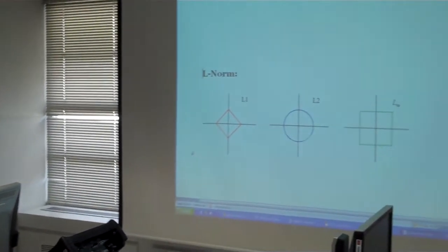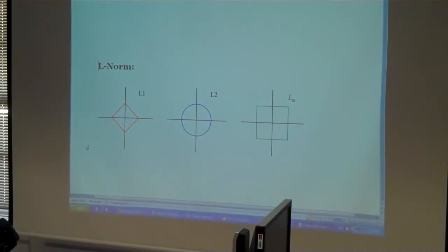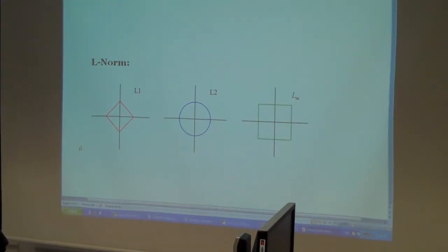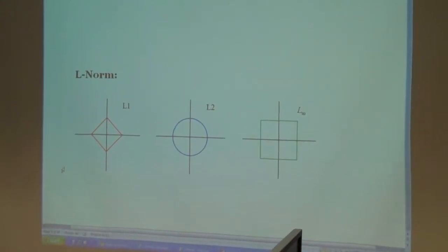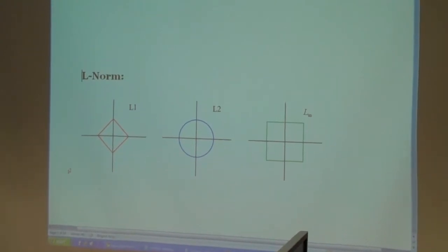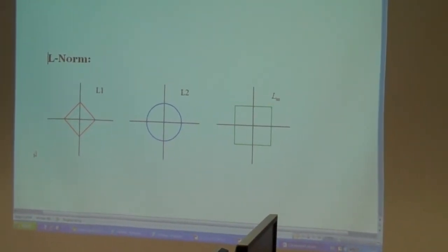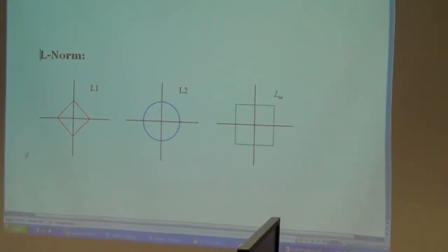As you know, these three shapes are the shape of L1, L2, and L-infinity. L1 is similar to absolute value, and L2 is a circle, and L3 and 4 and infinity is this shape.